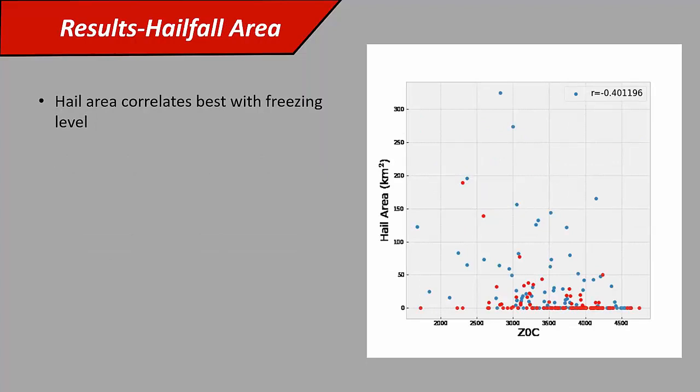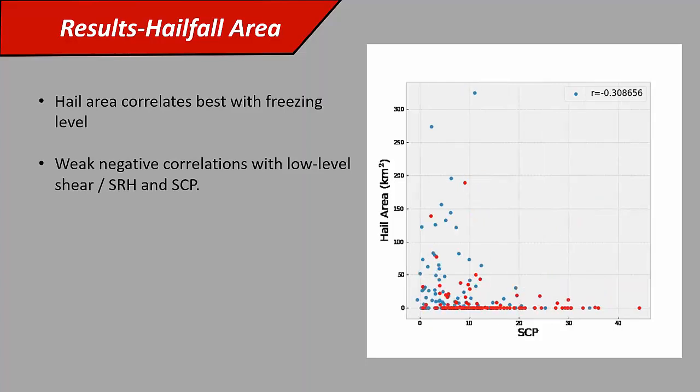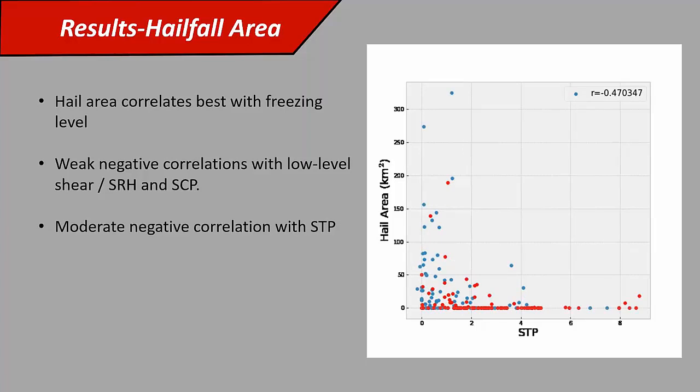Moving on to hailfall area. Hailfall area is interesting because you have a lot of cases where there's no hailfall area inferred from the algorithm. The correlations are very scattering and kind of wonky, and I take a lot of them with a grain of salt. The best individual parameter was freezing level, which makes sense for hailfall area. The colder it is, the more likely you are to have a larger area of hailfall, a negative 0.4 correlation there. There are weak negative correlations with low-level shear and SRH and supercell composite.